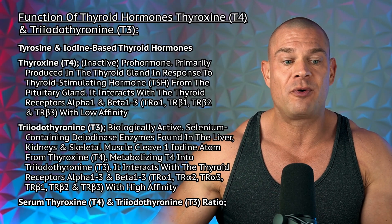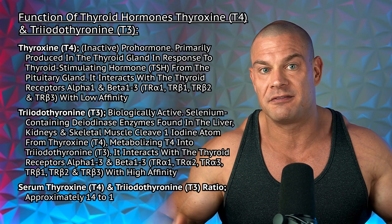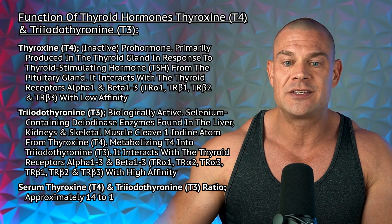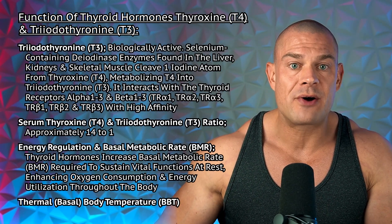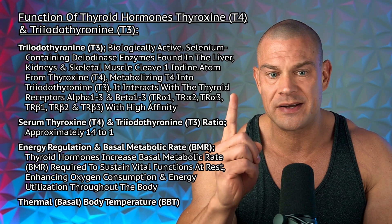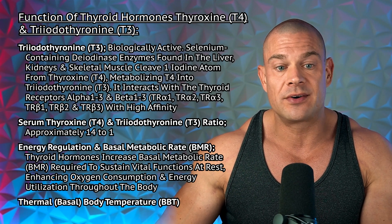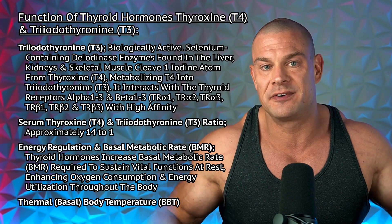Let's briefly discuss the function of thyroid hormones T4 and T3 so you have a clear understanding of what to expect from sobiturome supplementation. Both T4 and T3 are tyrosine and iodine-based thyroid hormones. Thyroxine T4 is an inactive — somewhat inactive — pro-hormone of T3, primarily produced in the thyroid gland in response to thyroid-stimulating hormone from the pituitary gland, and it interacts with thyroid receptor alpha-1 and beta-1 to 3, albeit with low affinity. Triiodothyronine is biologically active. Selenium-containing deiodinase enzymes found in the liver, kidneys, and skeletal muscle cleave one iodine atom from T4, metabolizing it into biologically active triiodothyronine, which interacts with thyroid receptor alpha-1 to 3 and beta-1 to 3, all with high affinity, albeit with slightly different levels.